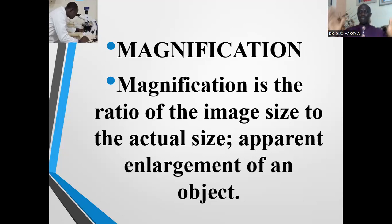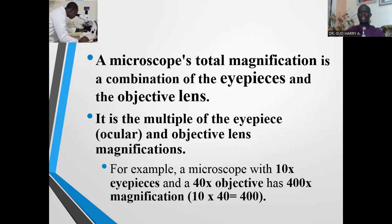Magnification is the apparent enlargement of an object — making an object bigger than its actual size when seen in the microscope. A microscope's total magnification is a combination of the eyepiece and the objective lens. It is the multiple of the eyepiece and objective lens magnification.